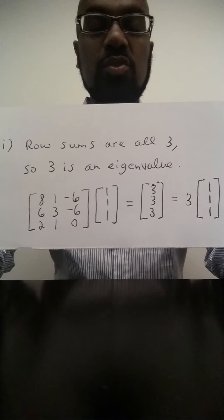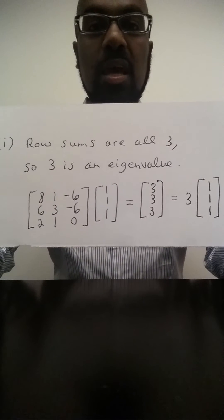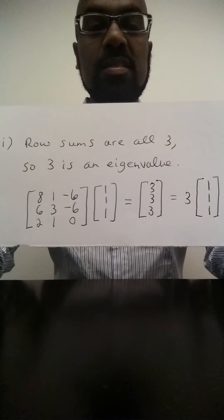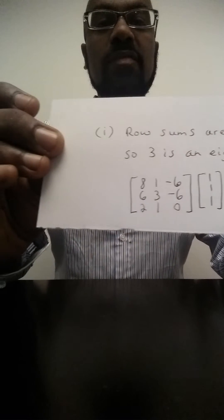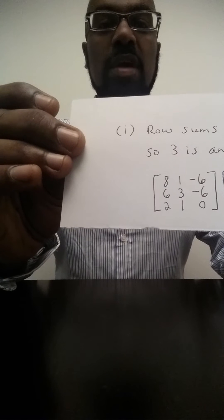Alright, so if we see a matrix whose row sums are constant K, we automatically get that K is an eigenvalue. Great, so we have one of the eigenvalues of this matrix. How do we find the other two?